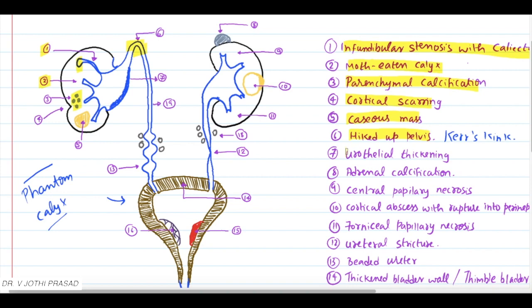Coming to the next finding, which is urothelial thickening. Calcification does not limit to the kidney as well as bladder - it can occur even in the adrenal gland. The eighth finding is adrenal calcification. The ninth one is central papillary necrosis.